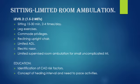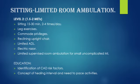Sitting limited room ambulation: Level 2, 2.5 METs. Sitting from 15 to 30 minutes, 2 to 4 times per day. Level 3, up to 3.5 METs — exercises with remote stimulation, reclining upright chair, limited ADLs, electric reserve, limited supervised room ambulation for small and uncomplicated MI. Education includes identification of cardiac risk factors, concepts of healing intervals, and the need to pace activities.